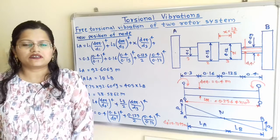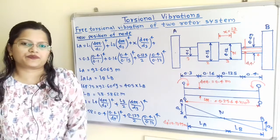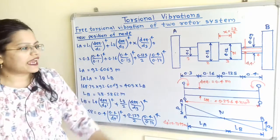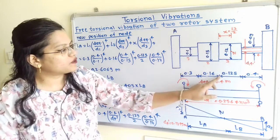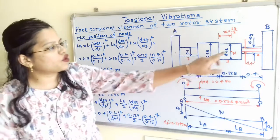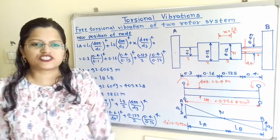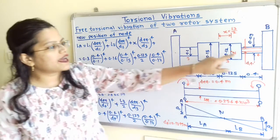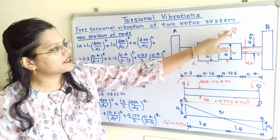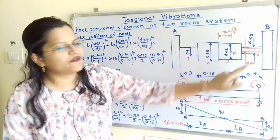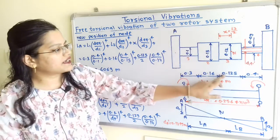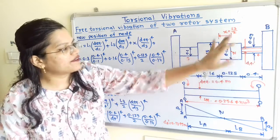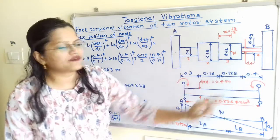Now we will move to the next part: the new position of the node in the actual system. It is given that it is required to have the new position of the node at the midpoint of section 3. That means X = L3 / 2. When the node point N lies at the midpoint of section 3, there should be a change in diameter for section 4. The original diameter is D4, but when node point X = L3 / 2, the new diameter will be D4 dash. The value of X = 0.125 / 2, and we need to find D4 dash.